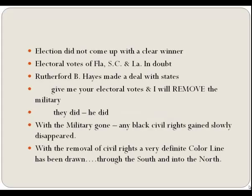There was no clear winner in the 1876 presidential election. The electoral votes in Florida, South Carolina, and Louisiana were in doubt. The former governor of Ohio, Rutherford B. Hayes, made a deal with those states: give me your electoral votes and I will remove the military. They did, and he did. He became president, and once the military was removed, any advances the freedmen had obtained in civil rights rapidly evaporated.